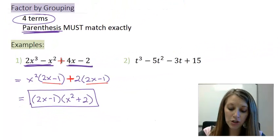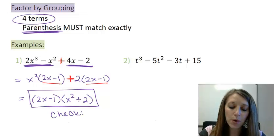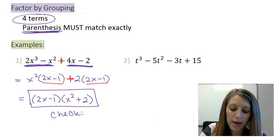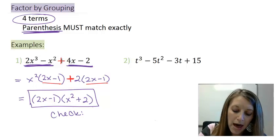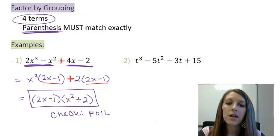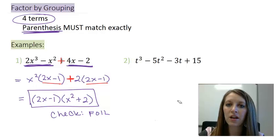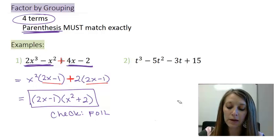Just like the common factor technique, you're always welcome to check these. Since we ended up with a binomial times a binomial, I would check by FOILing it back out. If you end up with the original problem, you've done it correctly. Now let's move to example two — I suggest you pause the video and see if you can factor this one on your own using the factor by grouping technique.